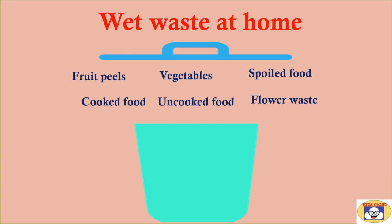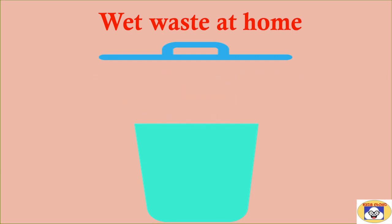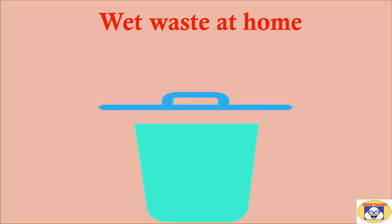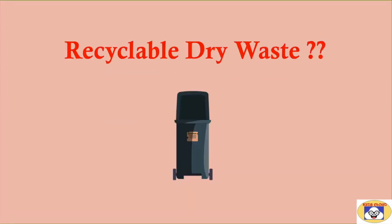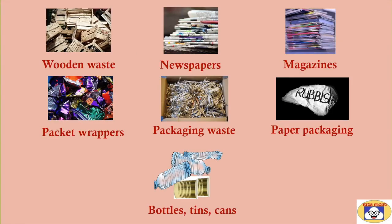Wet waste mainly includes fruit peels, vegetables, spoiled food, cooked food, uncooked food, and flour waste. This is biodegradable waste and we have to dispose of it properly. Now, which is the dry waste that is generated at home?